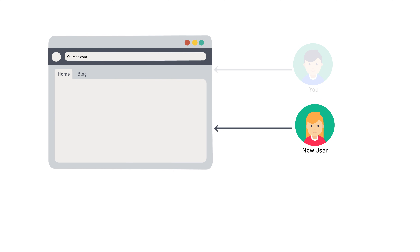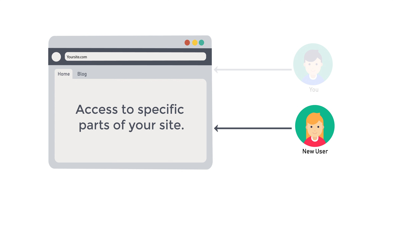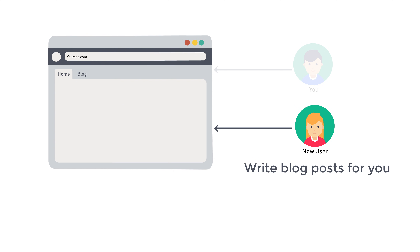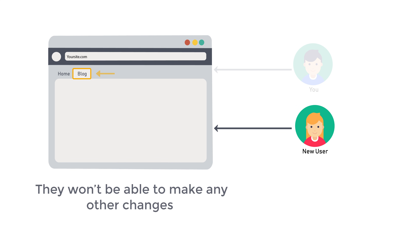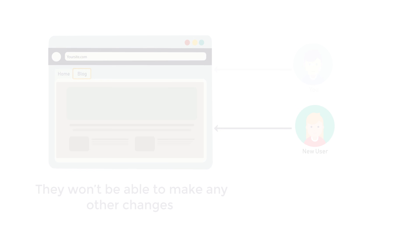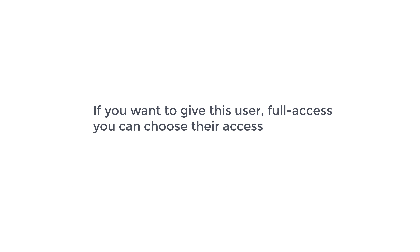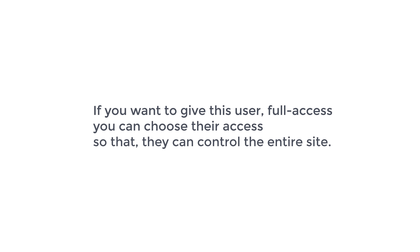Now when you add a new user, you can give that user access to specific parts of your site. For example, if you want this person to write blog posts for you, you can give them access to just blog posts on your site, and they won't be able to make any other changes. Now if you want to give this user full access, you can choose their access so that they can control the entire site.